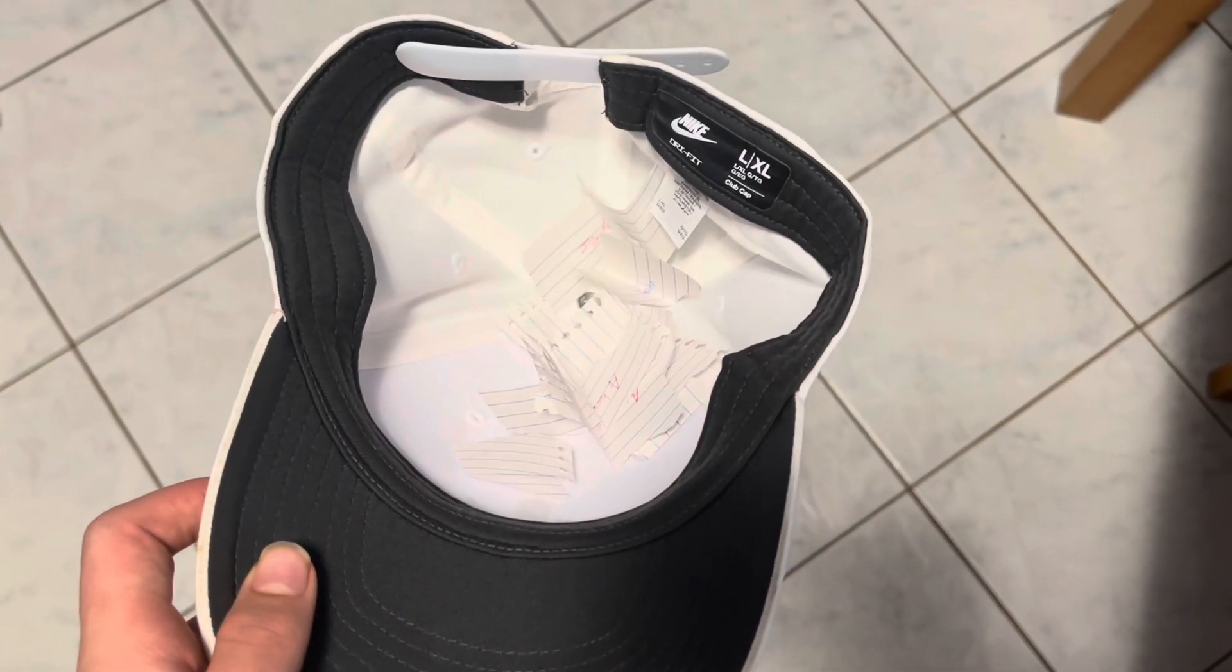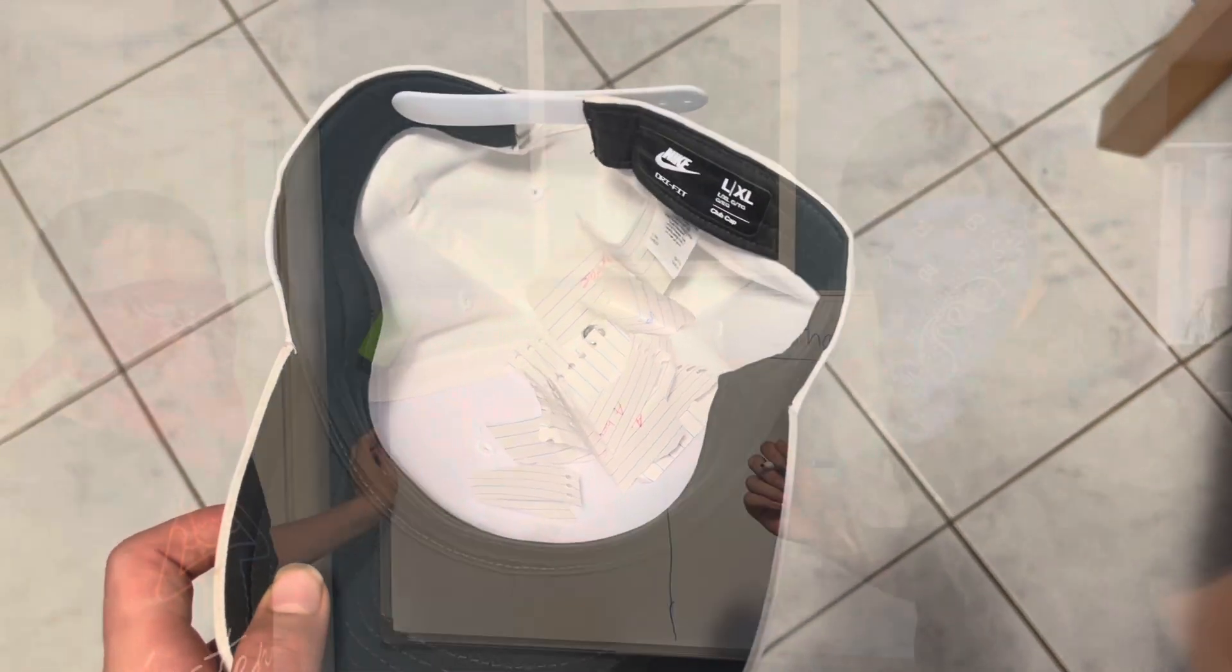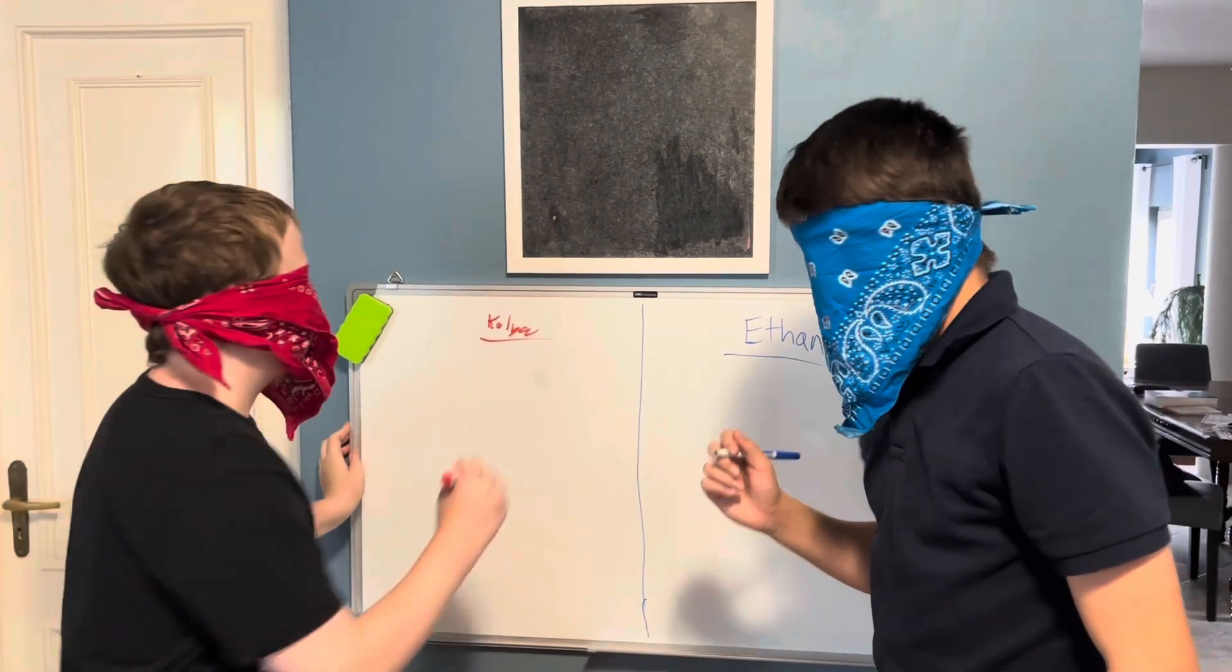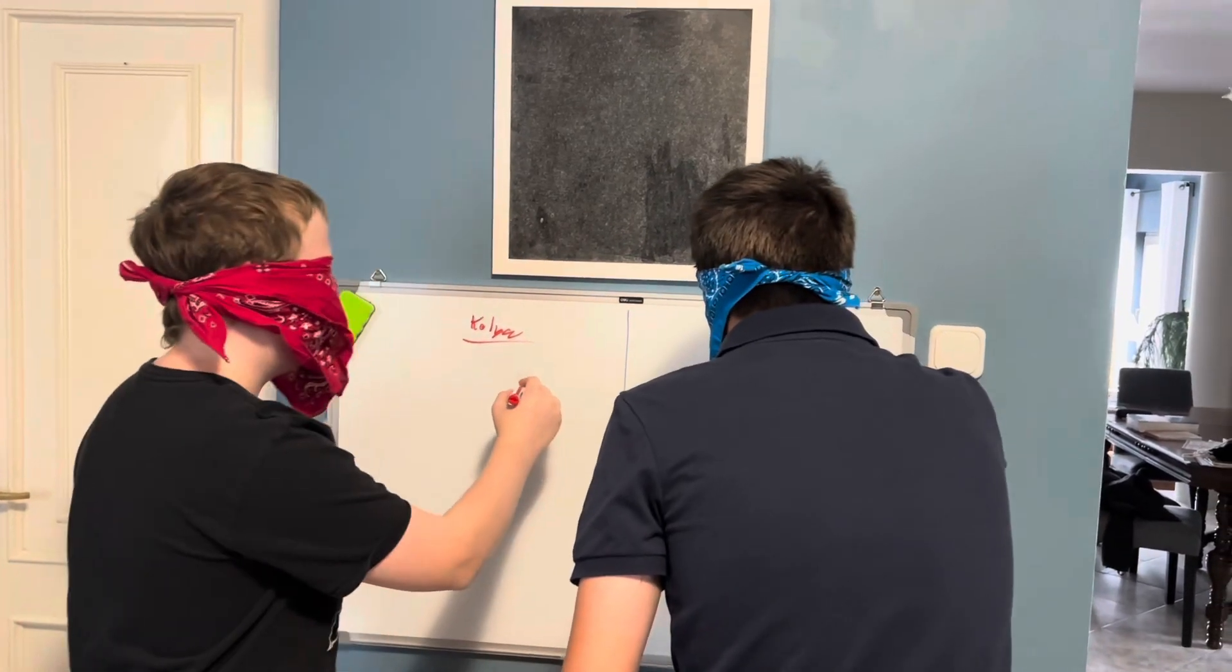Here is the words in the hat. There's ten words but we're only using seven though for seven rounds. And here's the first word, it's a roller coaster. Three, two, one, go.